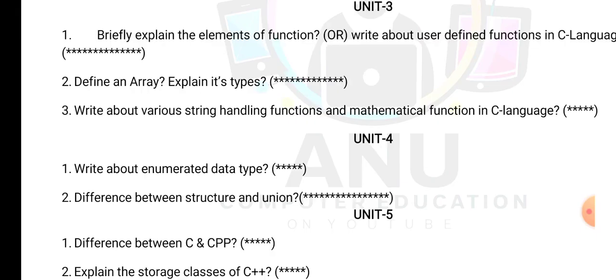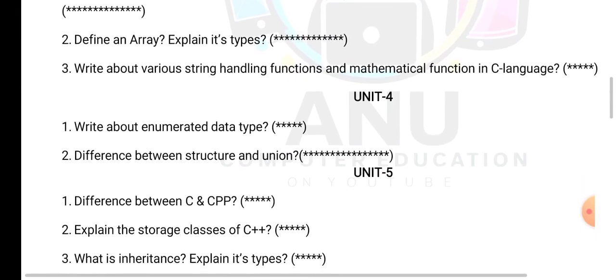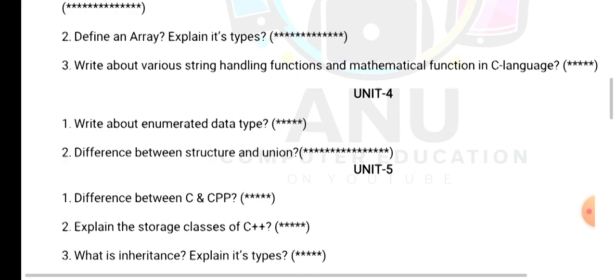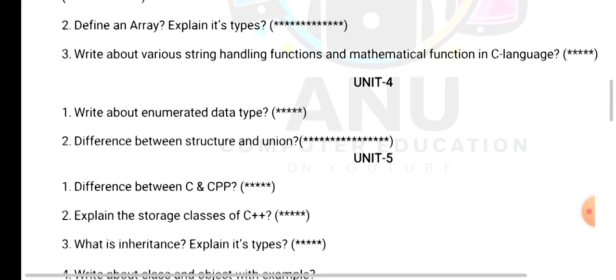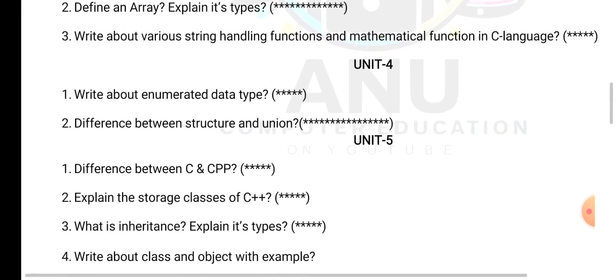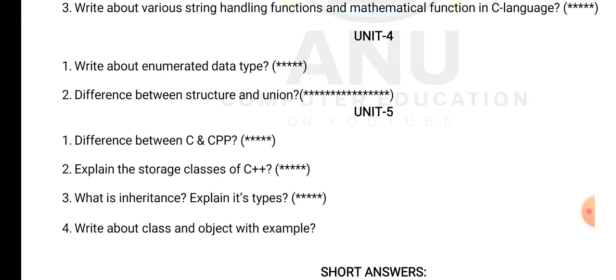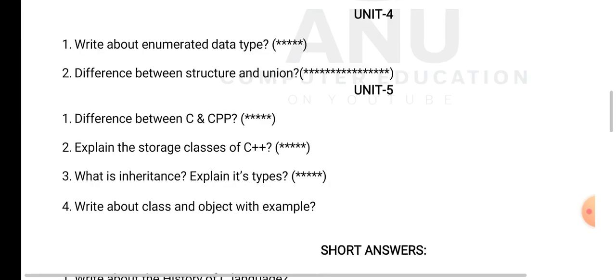So when it comes to the unit number five, compulsory first two three questions you have to learn: difference between C and C++, storage class, and inheritance. These three questions compulsory one question you can expect. So one class and object concept. So these are very very important questions from unit number five.